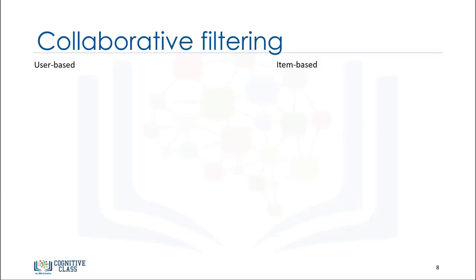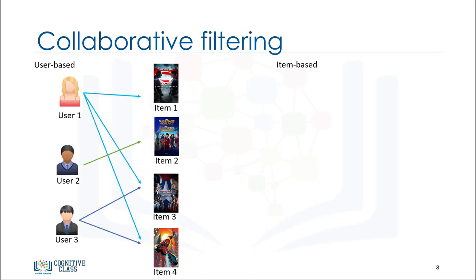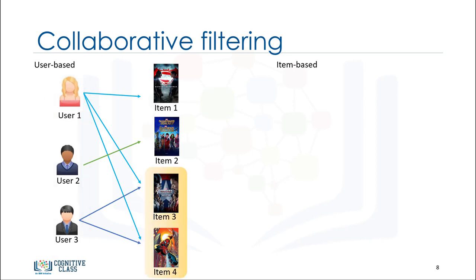Now let's examine what's different between user-based and item-based collaborative filtering. In the user-based approach, the recommendation is based on users of the same neighborhood with whom he or she shares common preferences. For example, as user 1 and user 3 both liked item 3 and item 4, we consider them as similar or neighbor users and recommend item 1, which is positively rated by user 1, to user 3.